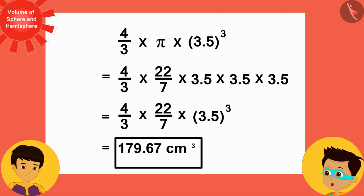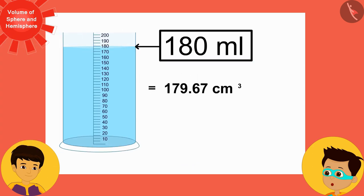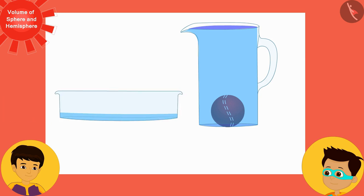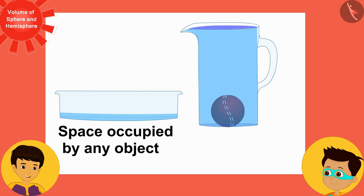This is equal to 179.67, that is approximately 180 milliliters. Why so? This is because the ball occupies some space in this vessel. The amount of space the ball occupies in this vessel is the amount of water spilled from the vessel and deposited in the container.